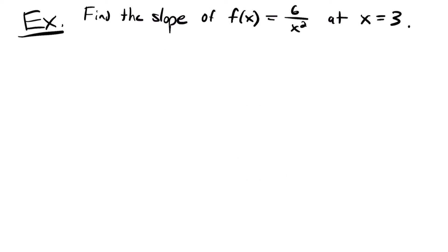Welcome back. We'll start with this one where we're asked to find the slope for the function 6 divided by x squared at the point x equals 3. To find the slope of a function at a particular point, we just have to take the derivative of this function and then plug in that point.